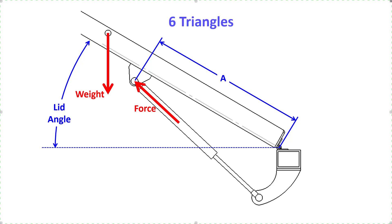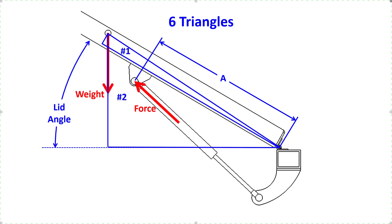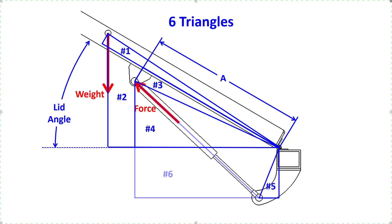So let's break this up into six different triangles: triangle number 1, number 2, number 3, number 4, number 5, and number 6. Let's look at each triangle in more detail.